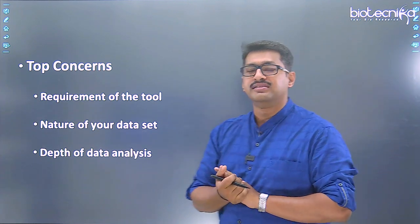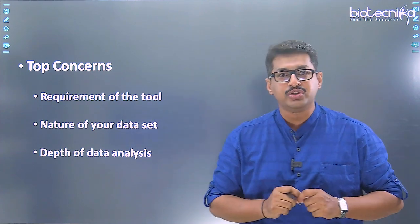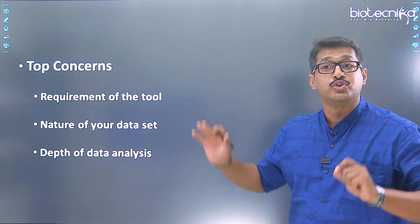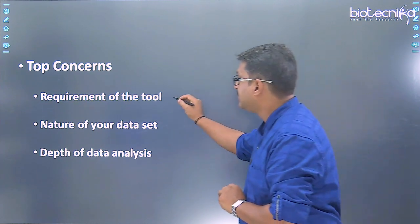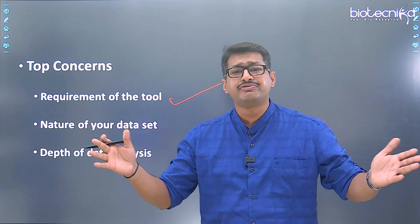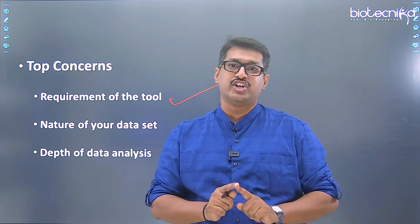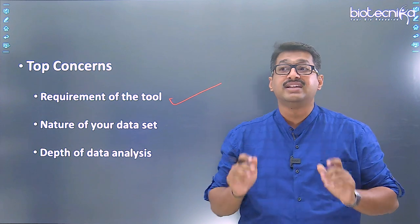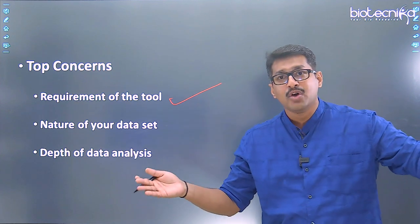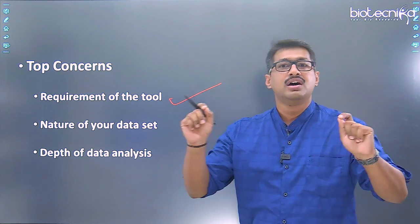We have certain top concerns. Before understanding the requirement of why I should learn bioinformatics, these are three major things a bioinformatician should always dwell upon. The first is the requirement of the tool — what is it you want to analyze. Many times I tell you that before you start bioinformatics, you need to put up a big picture. If you are not able to build your hypothesis, then this becomes very very difficult. Putting up a hypothesis will lead a path that tells you exactly what your requirement is, and based on that requirement, you design your tool.